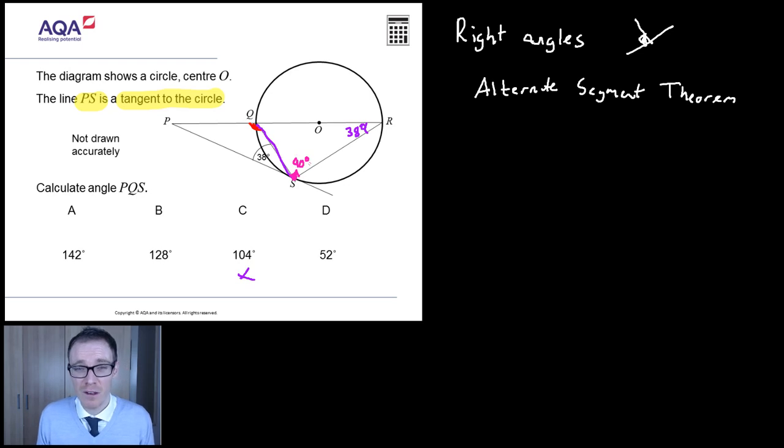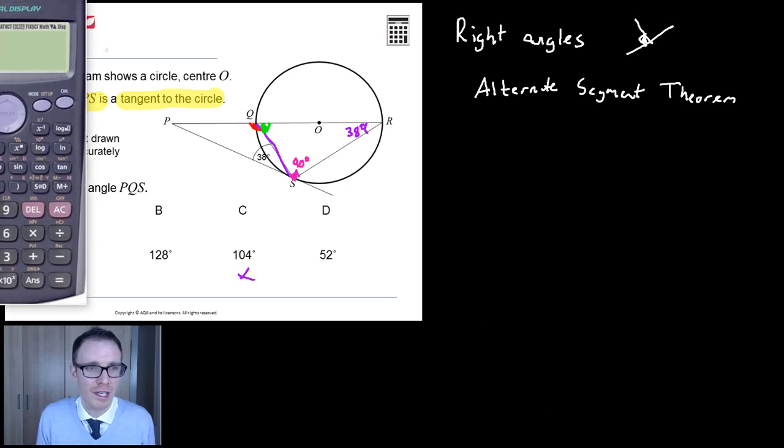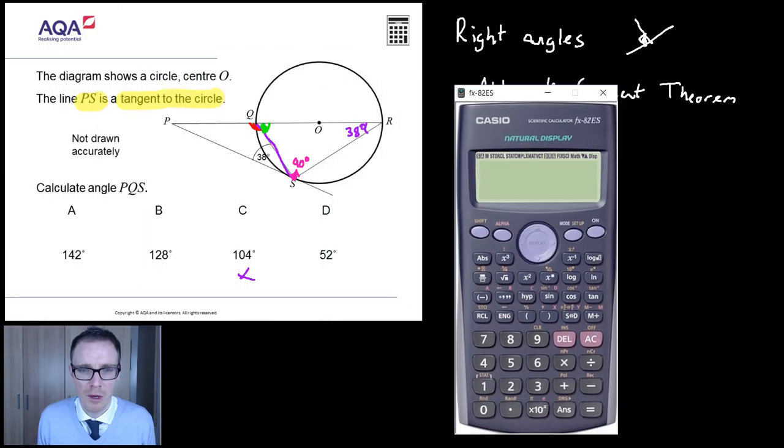Are we anywhere near our flipping answer yet? Well we're honing in on it, right? Because now I reckon we're in a position to work out this lovely little angle there. Because now we've just got angles in a triangle. I'll tell you what, I'm going to be lazy, because let me use a calculator, so I might as well use it. Bring him on here.